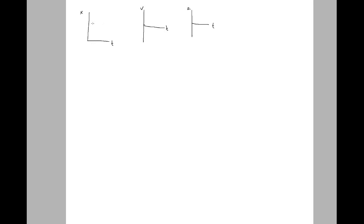Let's say I give you a position versus time graph that looks like this. My initial velocity — how I find that — is by the slope of the tangent line. If I stick a point right there and find the slope of that line, it is negative. That means my initial velocity must also be negative. As I continue moving down the line, my slope gets less and less negative, and it approaches zero. So my velocity must also get less and less negative, but approach zero.